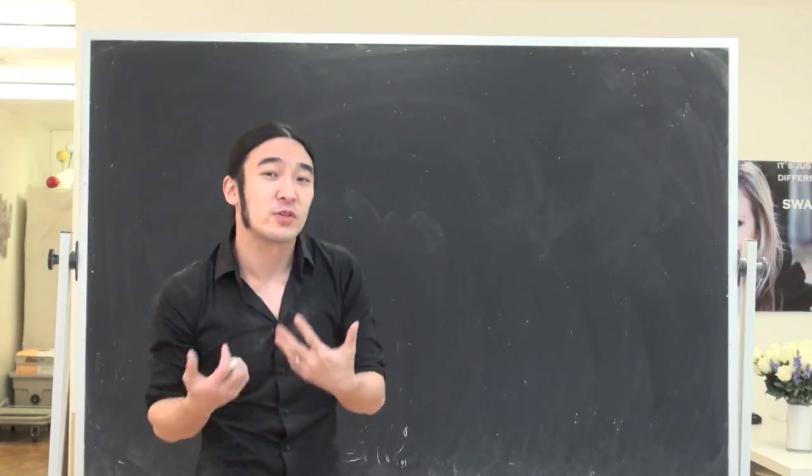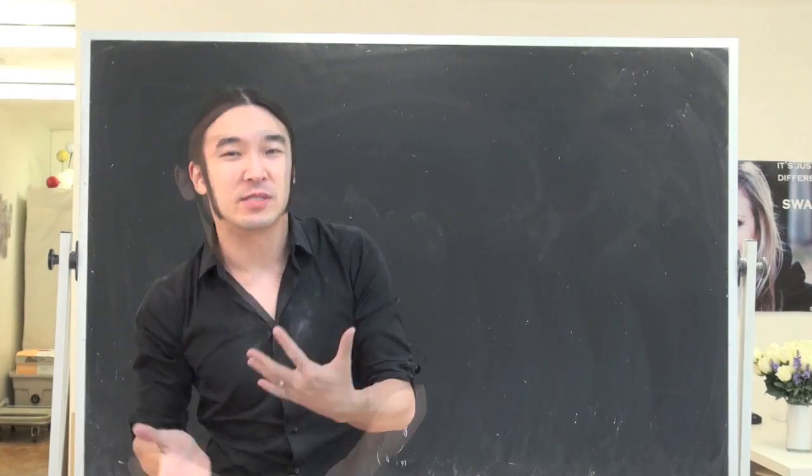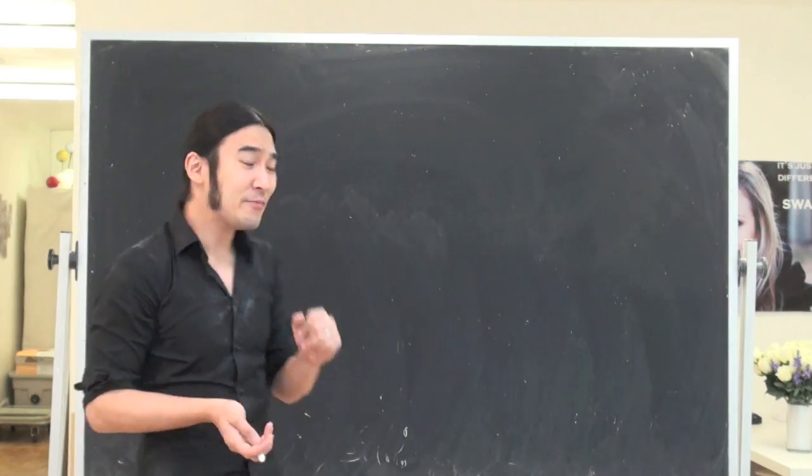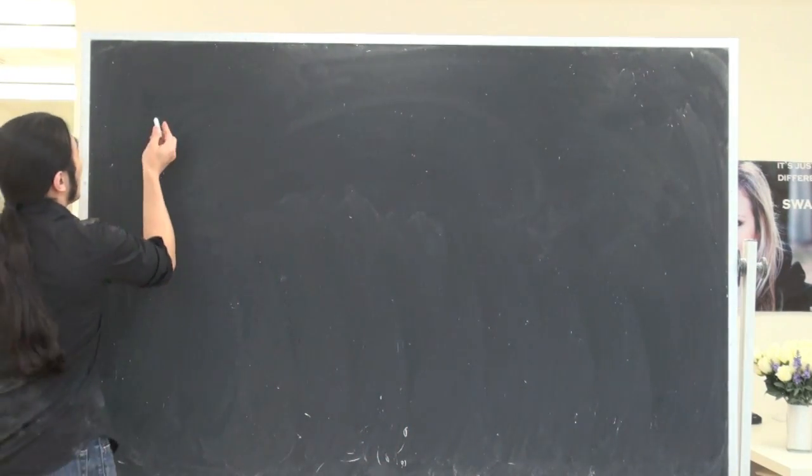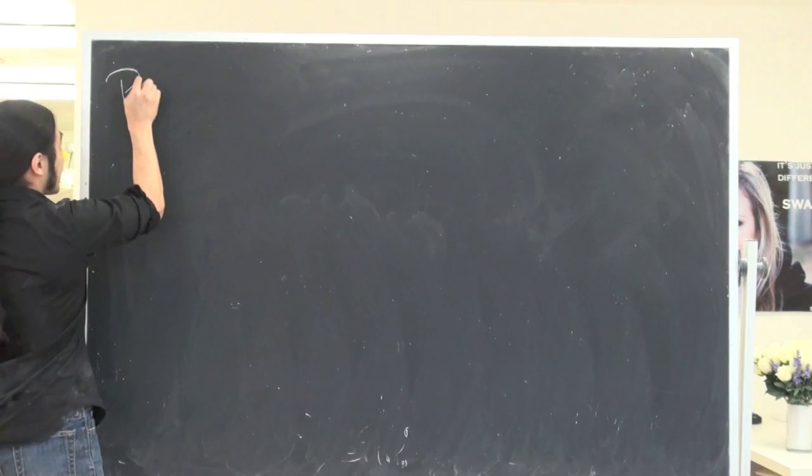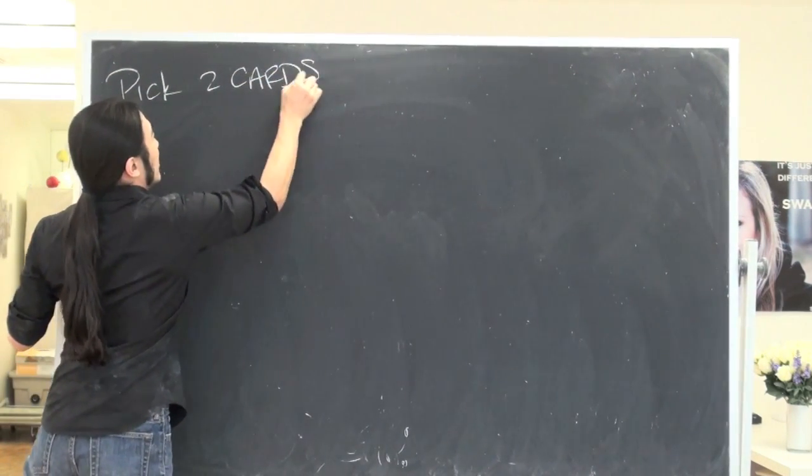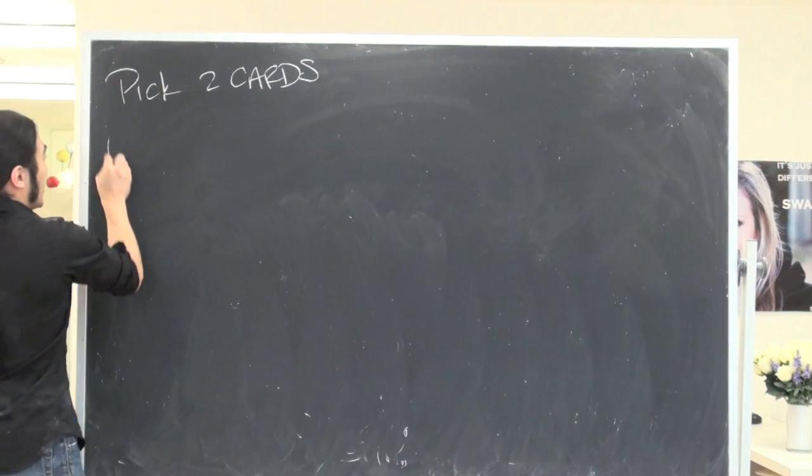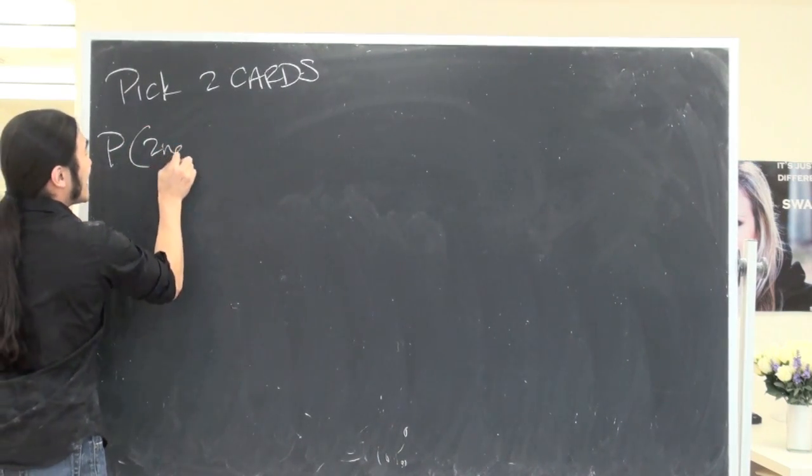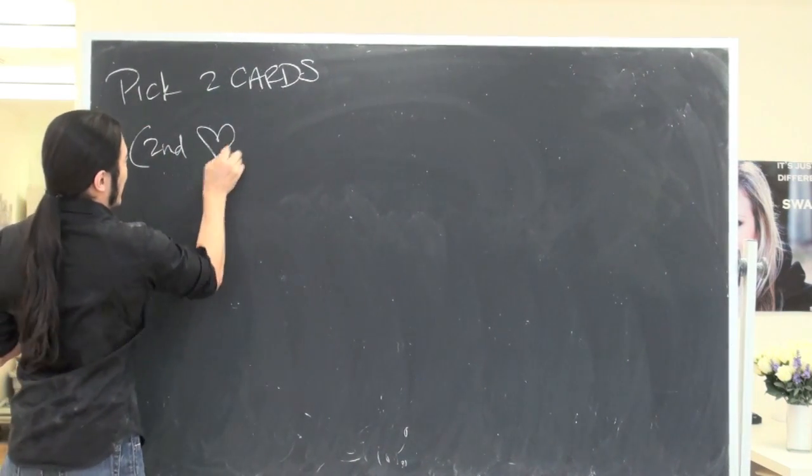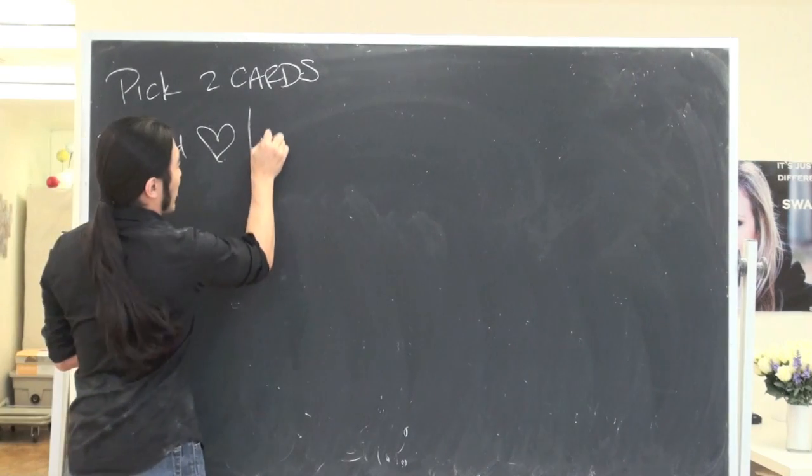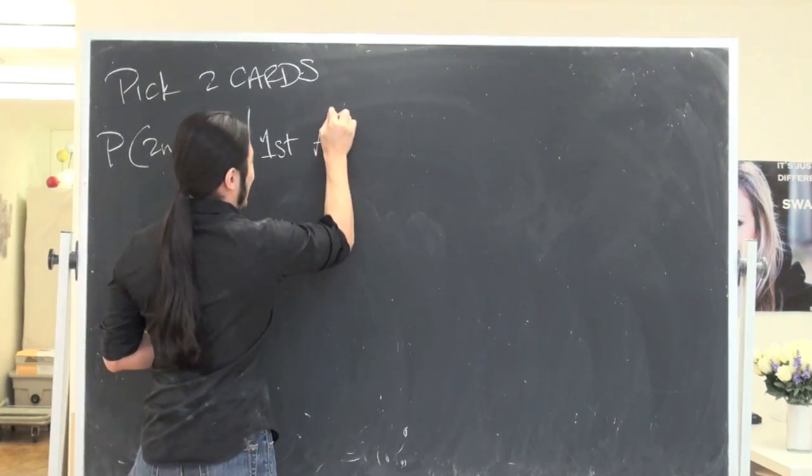Hi guys. Two quick responses to some questions I was sent. I changed the labels of the problems, but they're pretty much the same. So here's problem number one. You pick two cards. I want to know, what's the probability the second card is a heart, given that the first card was an ace?